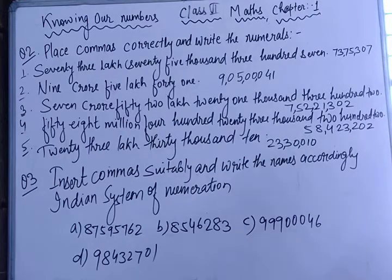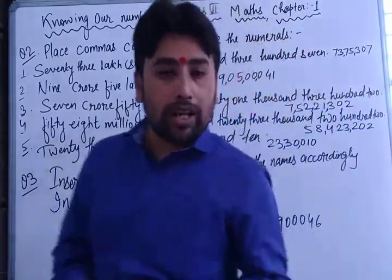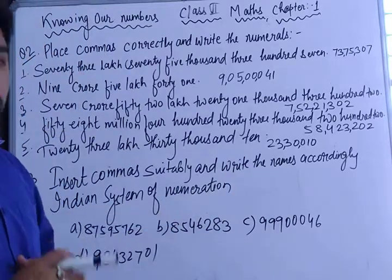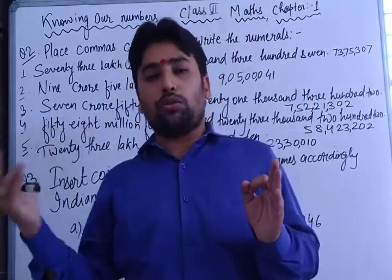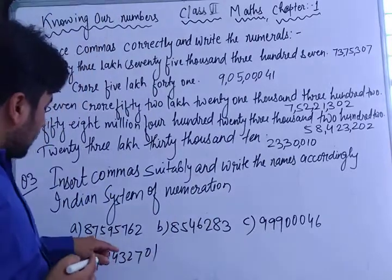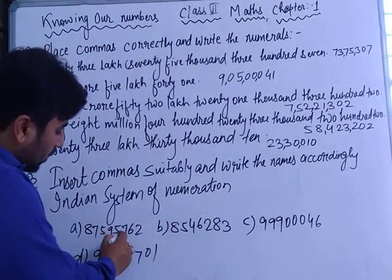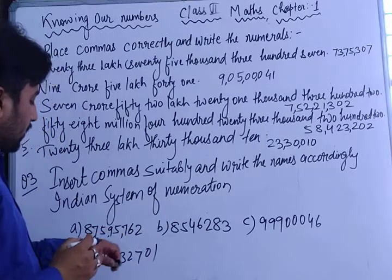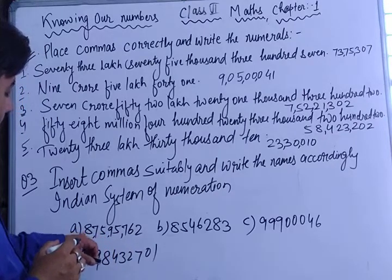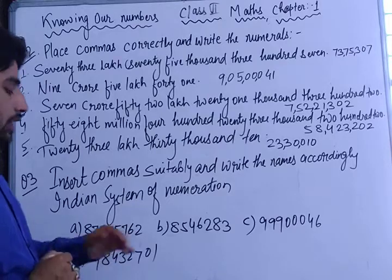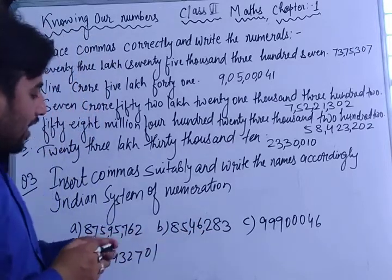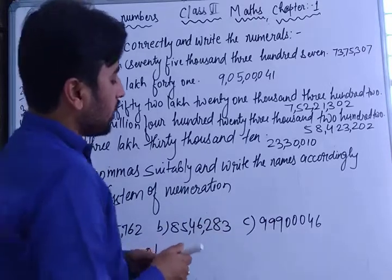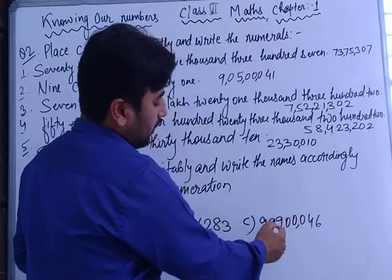Now let us come to the third question. Here numerals are already given and you have to place commas according to the Indian system — first comma after three digits from the right, then after every two digits. The first number is 87595762: unit, tens, hundred, thousand, ten thousand, lakh, ten lakh, crore — that gives eight crore seventy-five lakh ninety-five thousand seven hundred and sixty-two. The second number gives eighty-five lakh forty-six thousand two hundred and eighty-three.